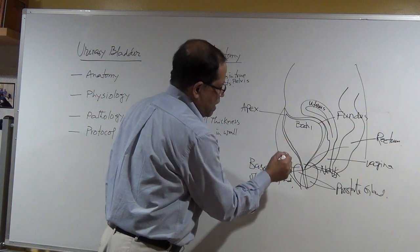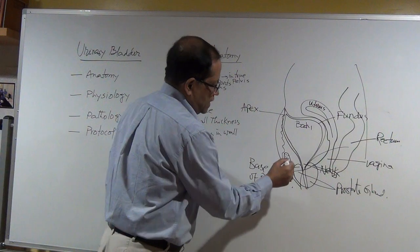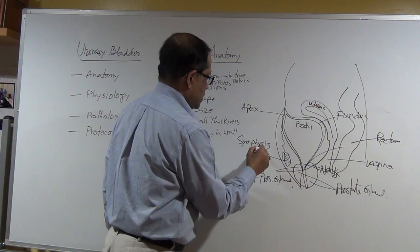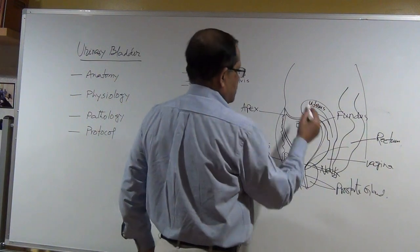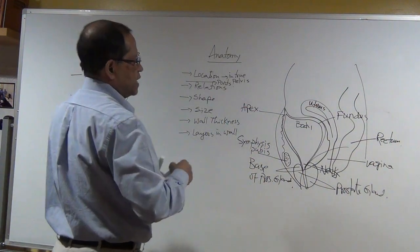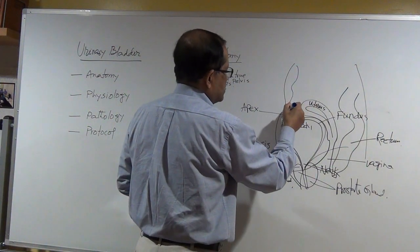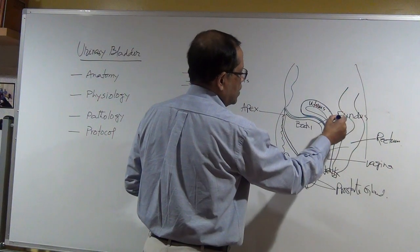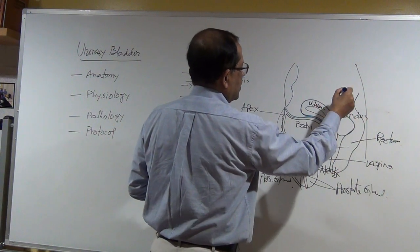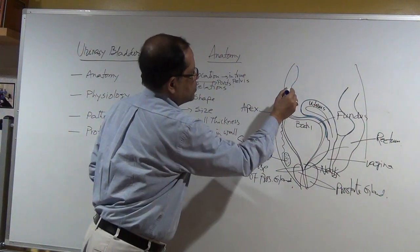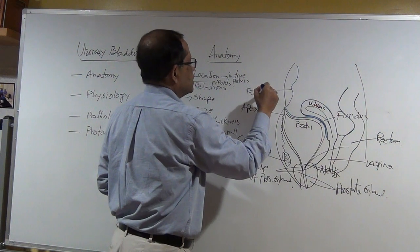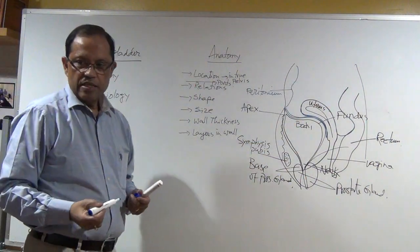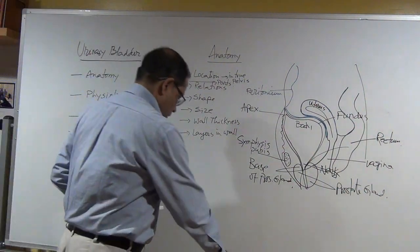Anterior to the bladder is the abdominal wall and below is the symphysis pubis. The bladder is a subperitoneal organ — it is below the peritoneum, that's why it is known as a subperitoneal organ.